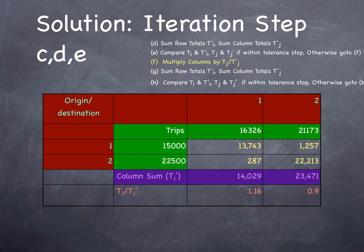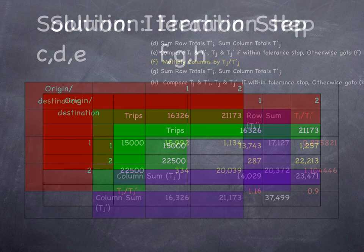Is the problem solved? If this were a singly constrained matrix, the problem would be solved. This is a doubly constrained matrix, and now we need to compare the column sums with what we started with. Well, the total is going to match, but the total in column 1, 14,029, does not match our original number of destinations, 16,326. And the total in column 2, 23,471, is not going to match 21,173. But they're in the neighborhood. We're not too far off. We're off by 16% and minus 10%. One of them is too high, and one of them is too low. For a singly constrained matrix, this would not be a problem, but for a doubly constrained matrix, we're not satisfying the number of trip destinations.